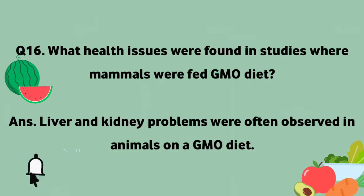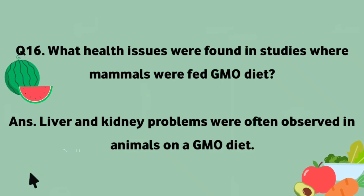What health issues were found in animals fed on a GMO diet? Liver and kidney problems were often observed in animals on a GMO diet.